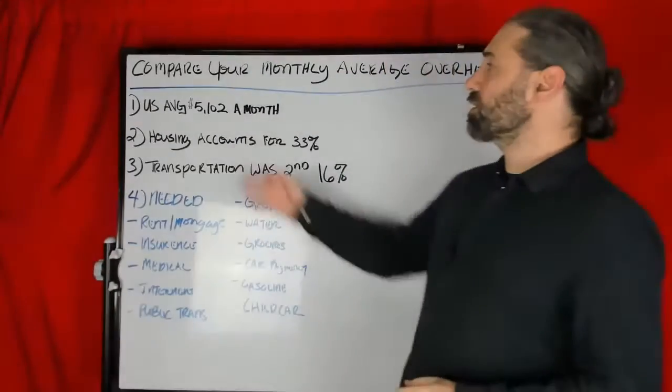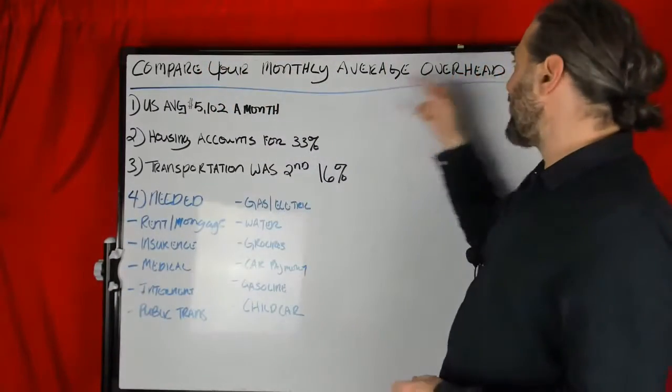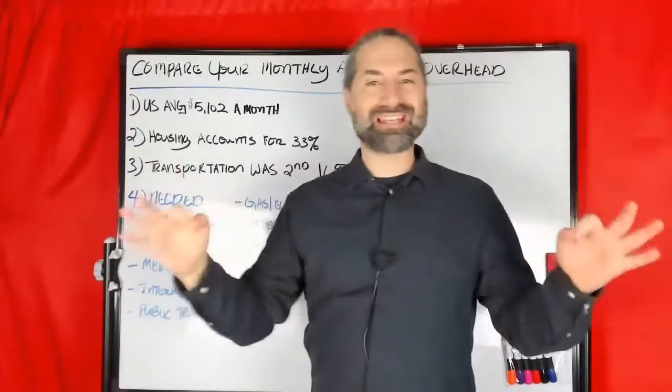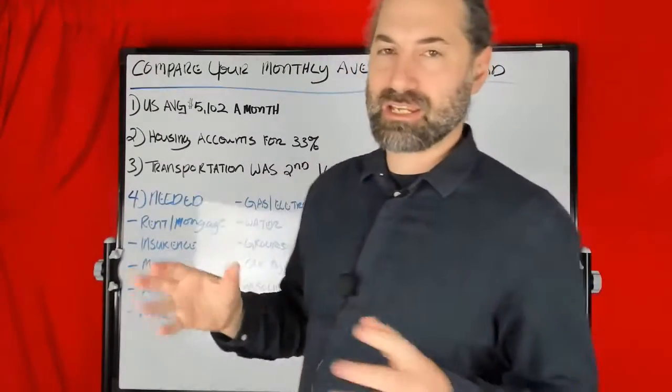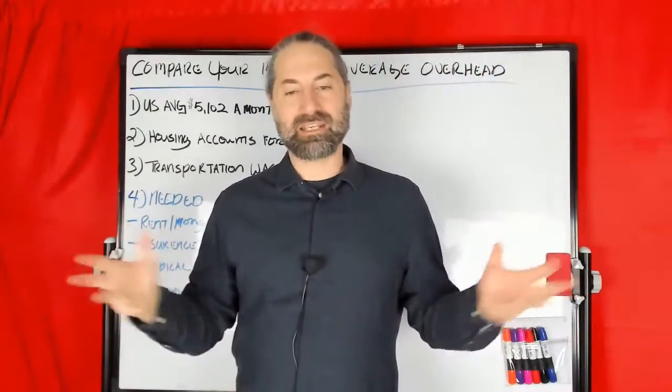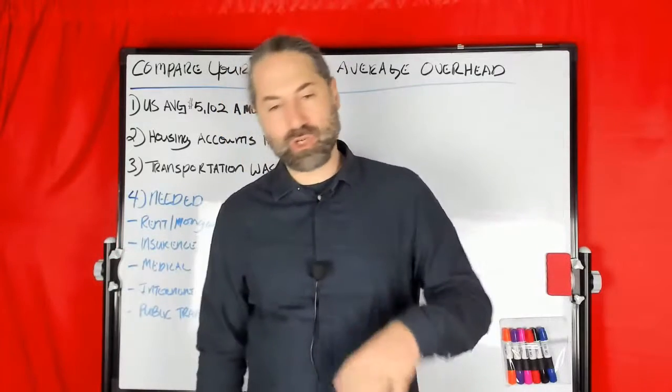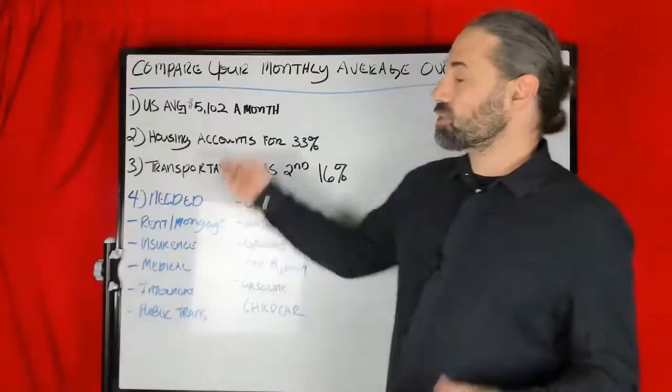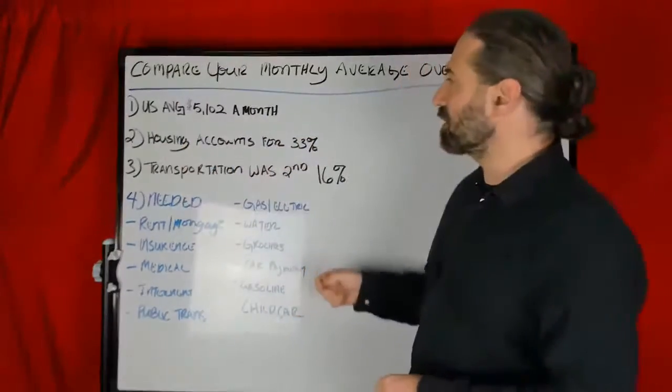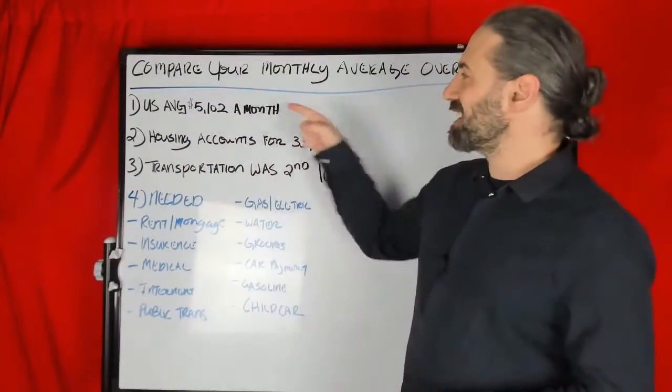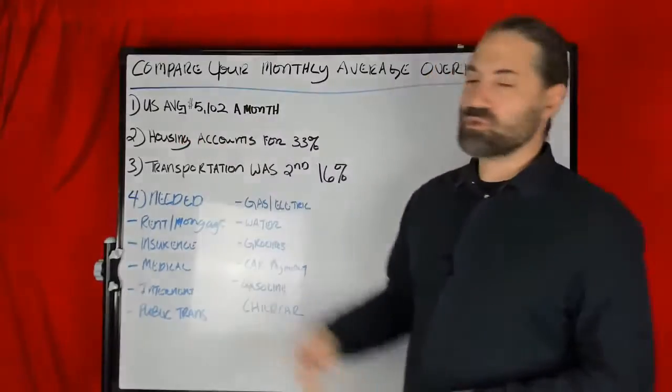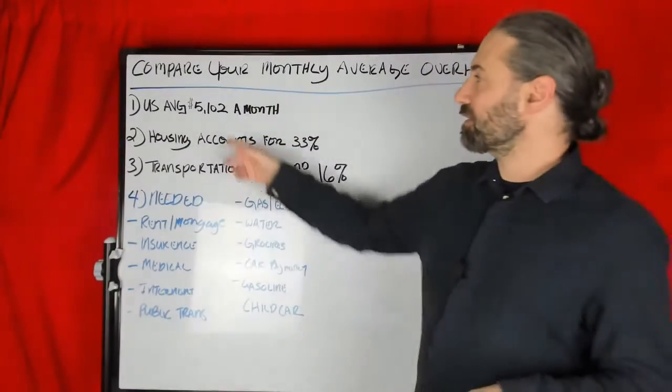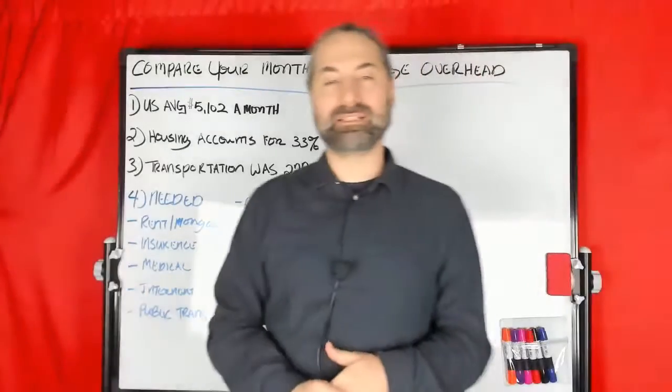First, we're going to compare your monthly average overhead to the U.S. average. This means every state in the U.S., the average household. According to the statistics of our government, it's saying that, on average, a U.S. family cost is $5,102 a month.